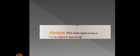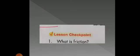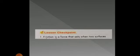Let's solve the checkpoints together. What causes objects to move, or what causes moving objects to stop moving? The answer is force — force can cause objects to move or cause a moving object to stop moving. The second question: what is friction? Friction is a force that acts when two surfaces rub together. Till here we finish the lesson. I hope you understood the lesson well. Thank you for listening, and please don't forget your homework. Goodbye!